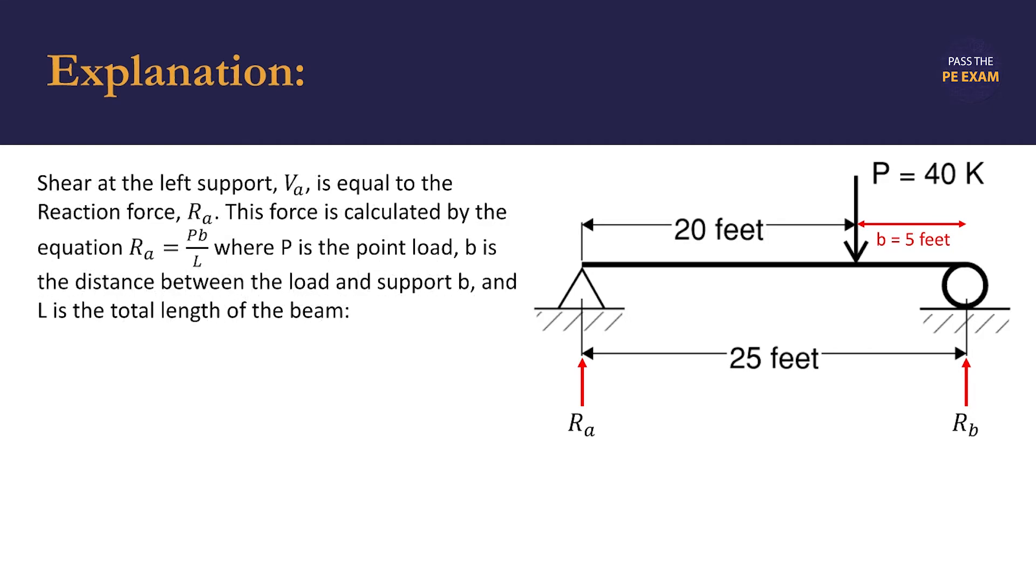The shear force at the left pin support, V_A, equals the reaction force at that point, R_A. This force is calculated by the equation R_A = P×B/L, where P is the point load (40 kips), B is the distance between the load and support B, and L is the total length of the beam.